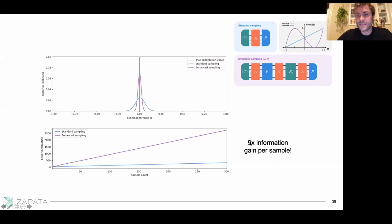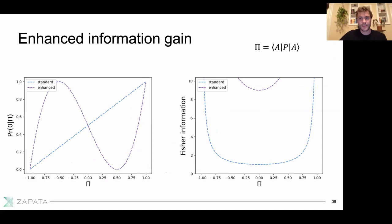It should be noted that while this is 9x per sample, each sample costs a bit more time because the circuits are longer — roughly by a factor of three. So you can imagine there being a 3x improvement in the information gain rate. If we plot this Fisher information versus the various true values, we see this 9x improvement consistently.